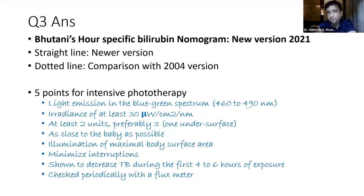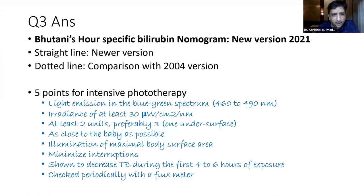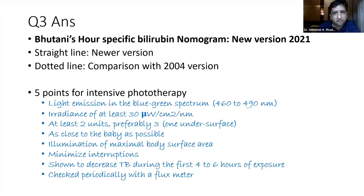The sample size is more than 140 times that of the previous version. For five points on intensive phototherapy: light emission must be in the blue-green spectrum, 460–490 nanometers; irradiance of at least 30 microwatts per centimeter squared per nanometer; at least two units, preferably three; keep lights as close to the baby as possible; maximize body surface area exposure; minimize interruptions; expect a decrease in bilirubin in the first four to six hours; and periodically check machines with a flux meter.